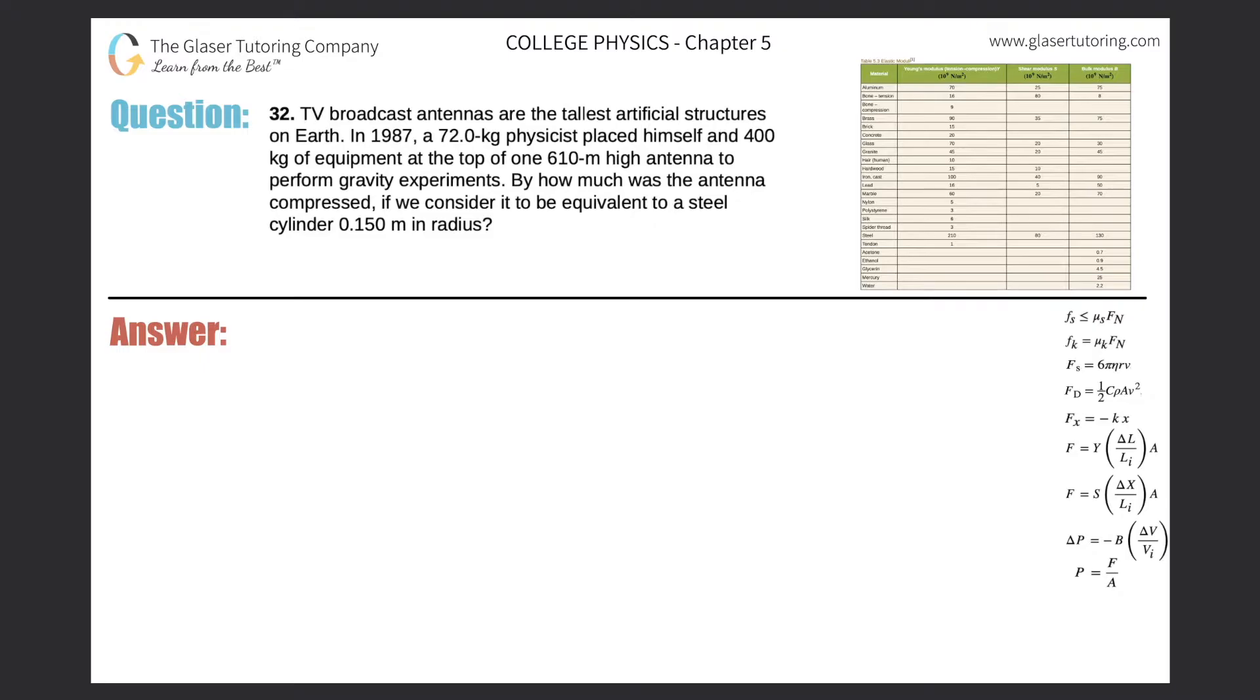Number 32. TV broadcast antennas are the tallest artificial structures on Earth. In 1987, a 72-kilogram physicist placed himself and 400 kilograms of equipment at the top of a 1,610-meter-high antenna to perform gravity experiments. By how much was the antenna compressed if we consider it to be equivalent to a steel cylinder, 0.15 meters in radius?